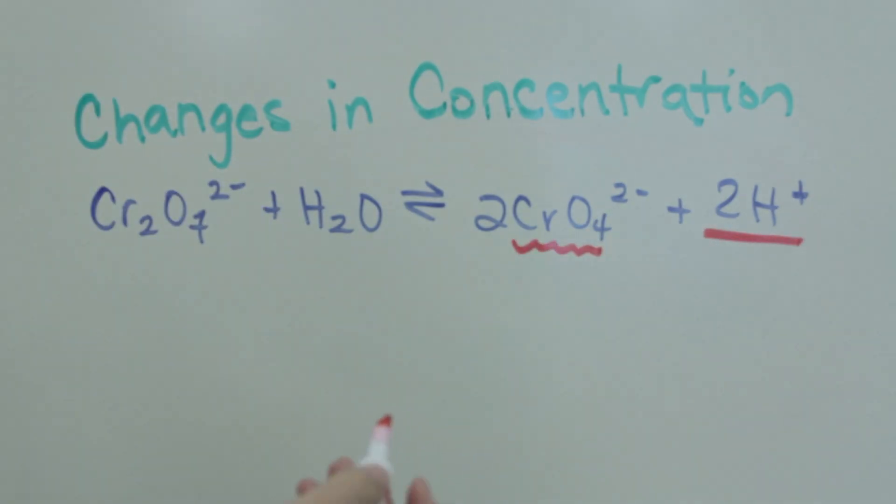In the first example we added H+, which increased the concentration of H+ in the equilibrium. This stress caused the equilibrium to shift left.